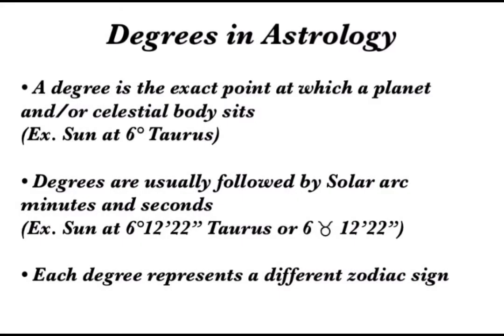A degree in astrology is the exact point at which a planet or celestial body sits. For example, when your sun is in, say, Taurus, it sits at a specific point — for this example, we use 6 degrees. Degrees are usually followed by arc minutes and seconds. So it doesn't just sit at 6 degrees Taurus; it'll be at 6 degrees, 12 arc minutes, and 22 arc seconds. Or it may look like 6 degrees with the Taurus symbol followed by the arc minutes and arc seconds.